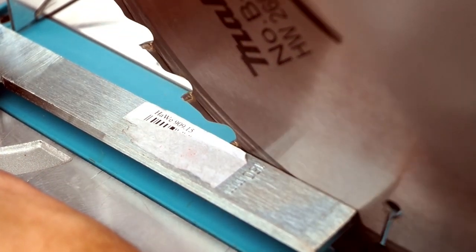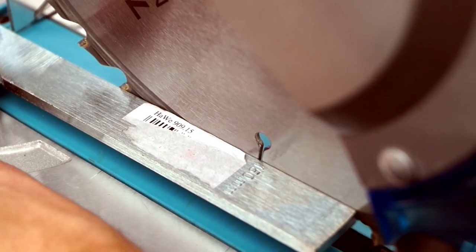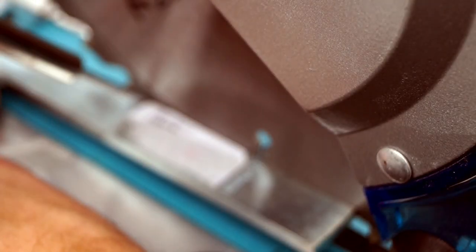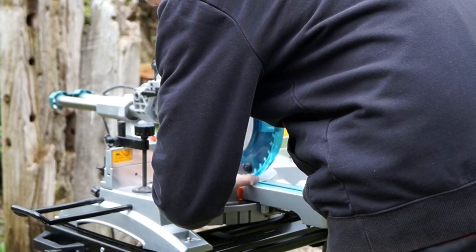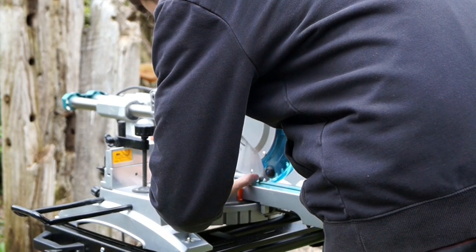Then get yourself a long square and move the fence till it's square to the blade. The trickiest part are the teeth of the saw blade, which protrude from the main body. Tighten the screws down.